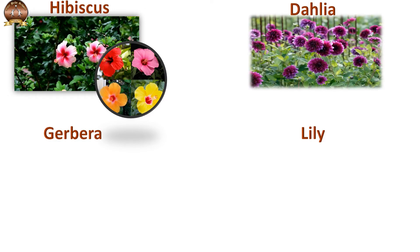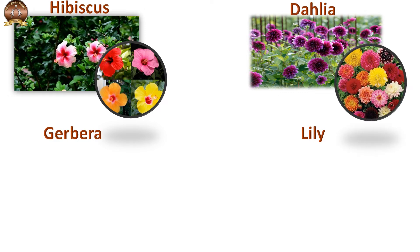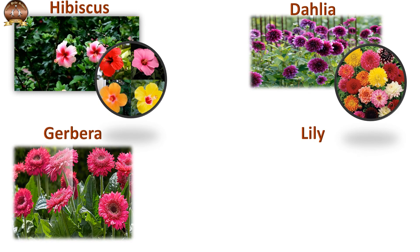Dahlia. Dahlia also comes in multiple colors and even the petal texture differs. Jabera also comes in multiple colors — these flowers have blue, pink, yellow and many shades of pink.